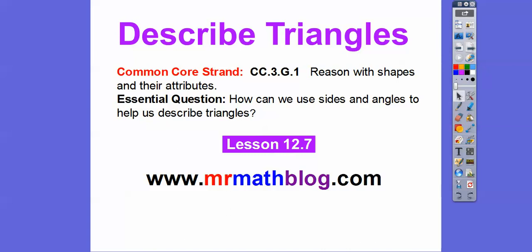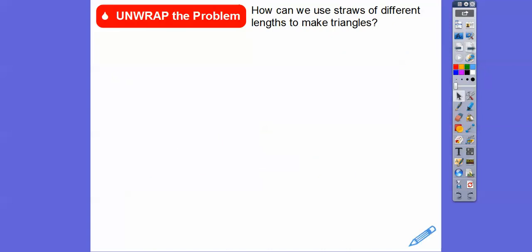So this question is: how can we use the sides and the angles to help us describe triangles? How can we use straws of different lengths to make triangles?